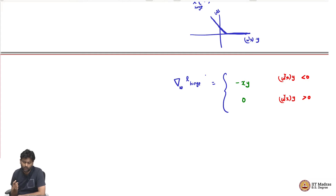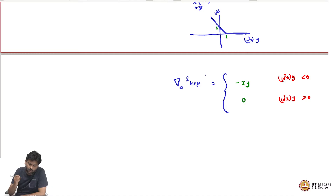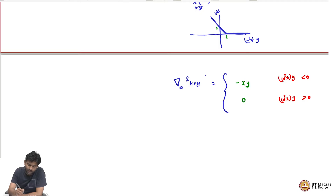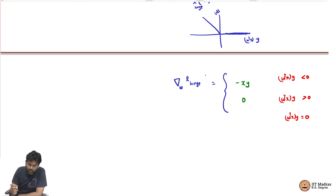When W transpose x times y is at 0, the hinge loss value is 1. So now the gradient is: minus x times y if W transpose x times y is less than 0; and it is going to be 0 if W transpose x times y is greater than 0. At W transpose x times y equal to 0, this function is not differentiable because it is an intersection of two piecewise linear functions.